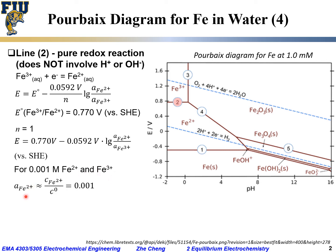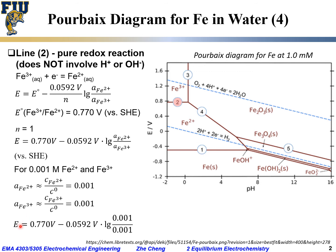The Pourbaix diagram is drawn for 1.0 millimolar, meaning 0.001 mol/L for both Fe²⁺ and Fe³⁺. For such a dilute solution, the activity is approximated by the concentration divided by the standard concentration, which gives 0.001 for both Fe²⁺ and Fe³⁺. With these values, the electrode potential equals 0.770 V minus 0.0592 times the log of (0.001 divided by 0.001).